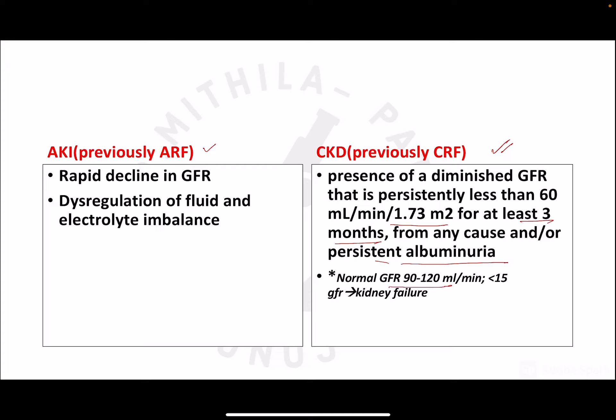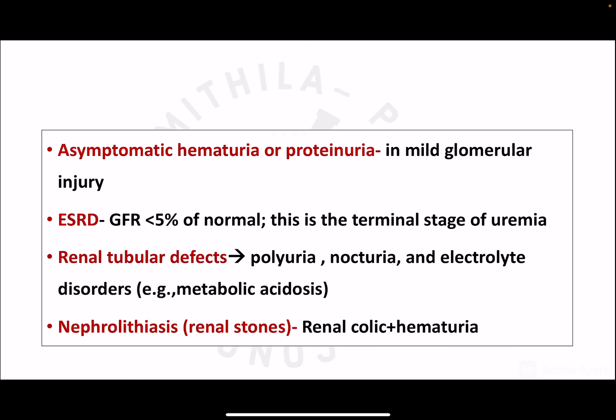Normal GFR ranges from 90 to 120 mL/min. When GFR falls below 15 mL/min, it signifies kidney failure. Asymptomatic hematuria or sub-nephrotic proteinuria can be seen in mild glomerular injury, which is most commonly immune-mediated. End-stage renal disease occurs when GFR is less than 5% of normal and generally progresses from chronic kidney disease — it is the last stage of uremia.